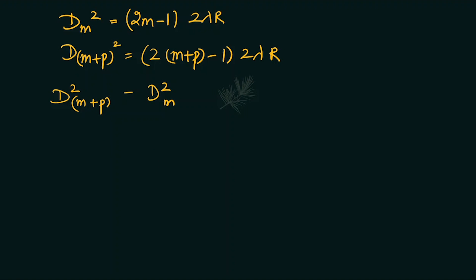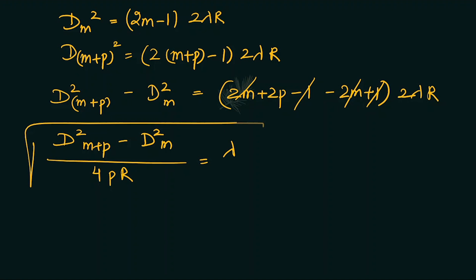We put 2(2m+2p-1) minus 2(2m-1), that is common, 2λR. This will cancel, so our expression for finding lambda comes out to be (d²_{m+p} - d²_m)/(4pR) = λ. So this is the expression.